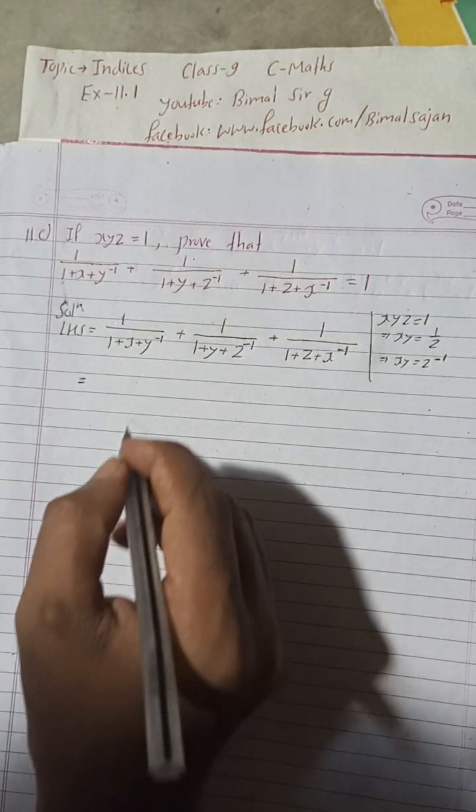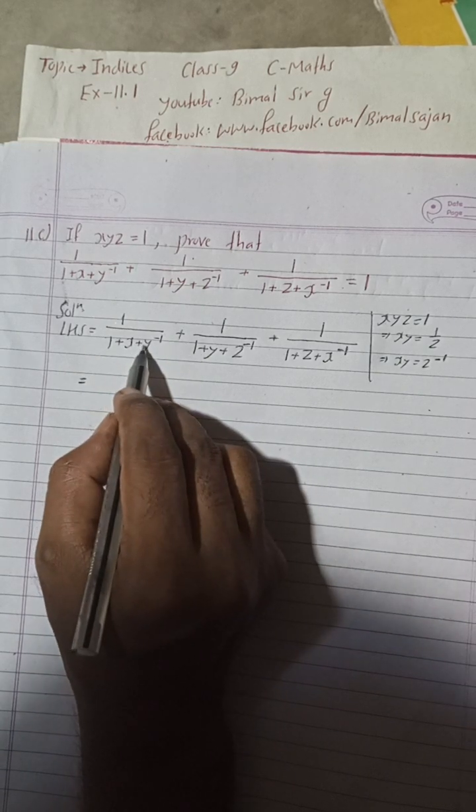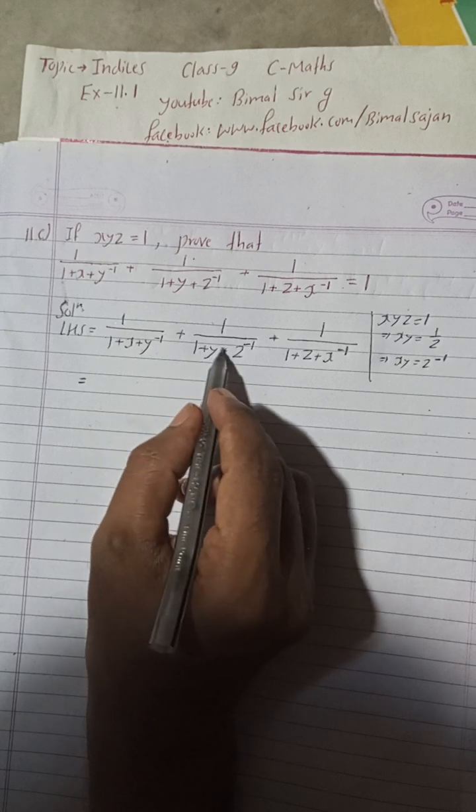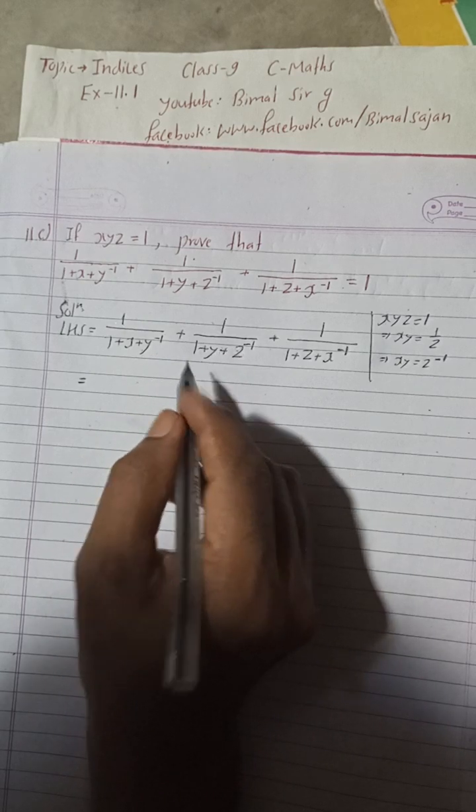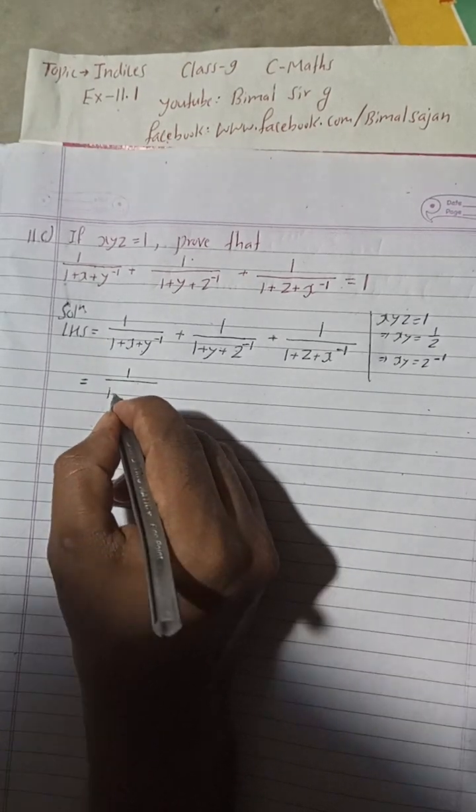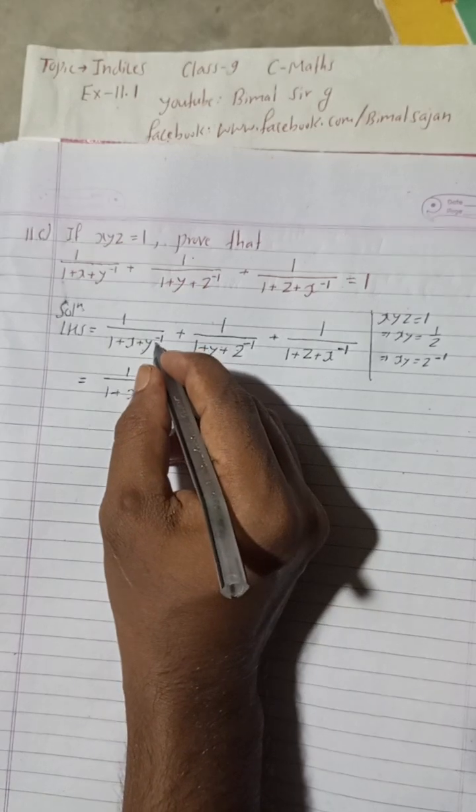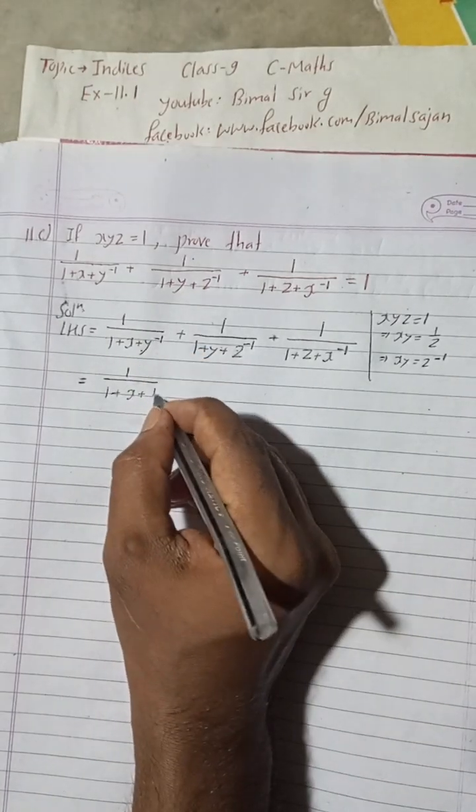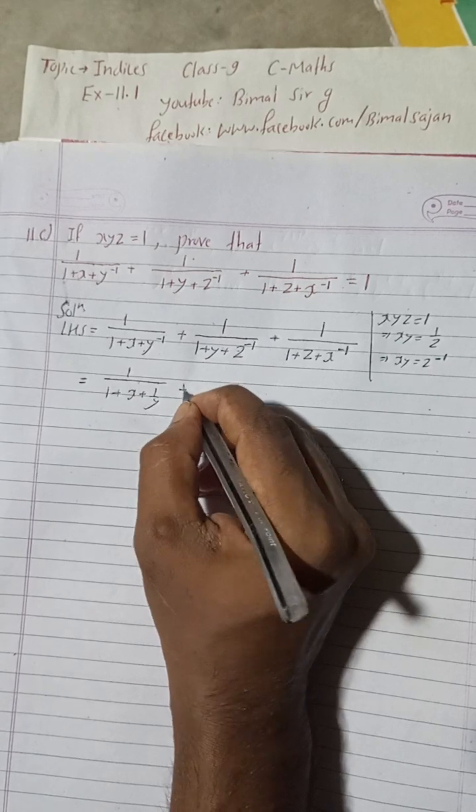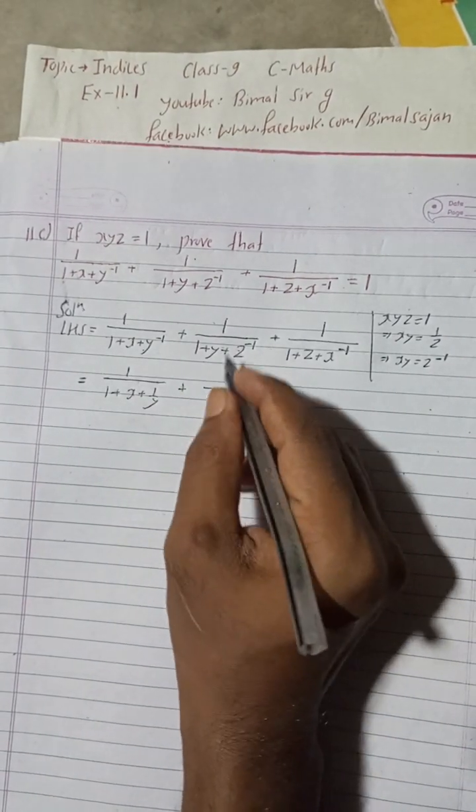Now this is xy in place of z inverse. We can add: this is 1/(1+x+y^(-1)), which will be 1/(1+x+1/y).